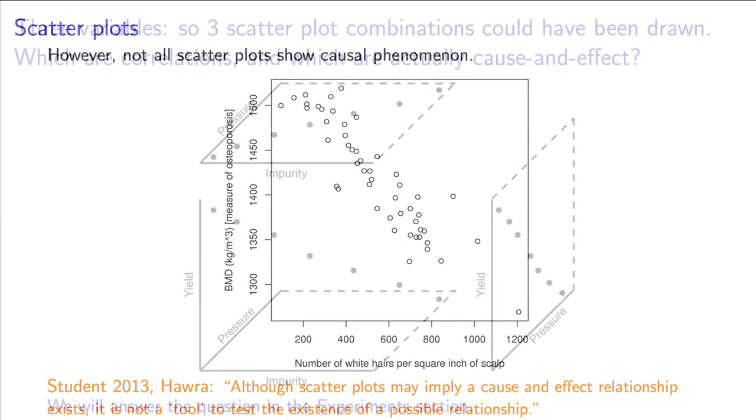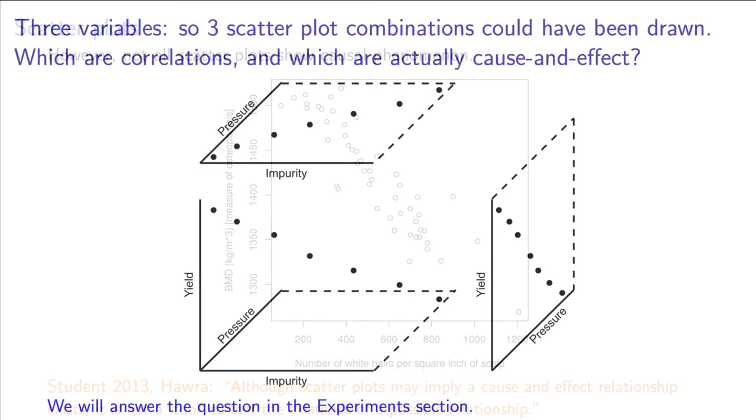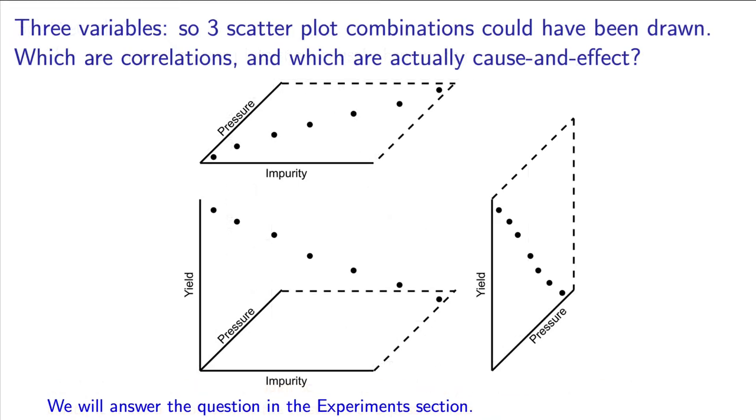That was a simple example, but in your career as an engineer, you will be tricked many times by hidden variables. You will plot a scatter plot between two variables and notice a trend, and think that you've discovered an interesting cause and effect relationship.